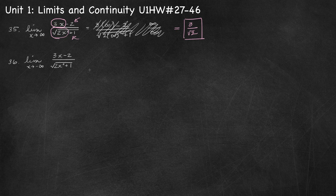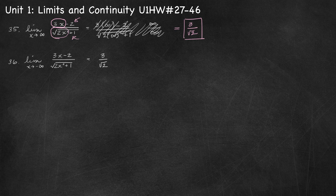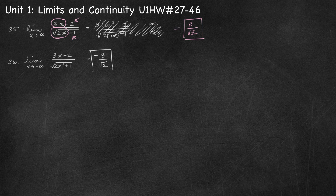Number 36, same function but taking the limit as x approaches negative infinity. Degree 1 in the numerator, degree 1-ish in the denominator — same degree, so we compare leading coefficients and get 3 over square root of 2. But we need to check signs: as x approaches negative infinity, 3x minus 2 is negative, so the numerator is negative. In the denominator, x is squared so it becomes positive, and the square root of a positive is positive. So the limit is negative 3 over square root of 2.